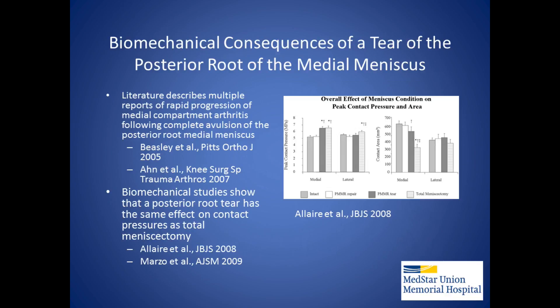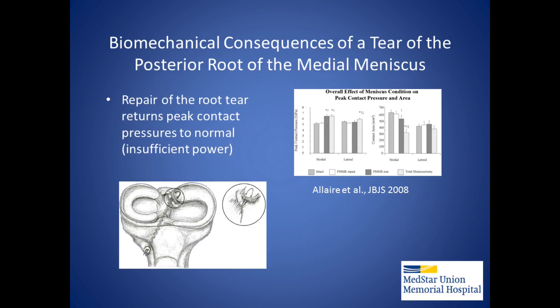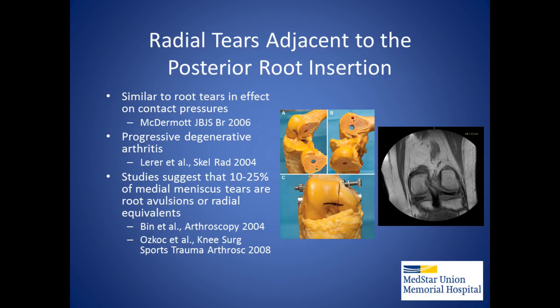Other reports in the literature describe rapidly progressive arthritis within the medial compartment following complete avulsion of the posterior root of the medial meniscus. Biomechanical studies show that a posterior root meniscal tear has the same effect on contact pressures as a total meniscectomy. Repair of the posterior root insertion has been shown to return peak contact pressures to normal.